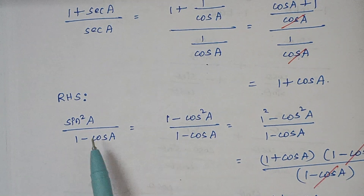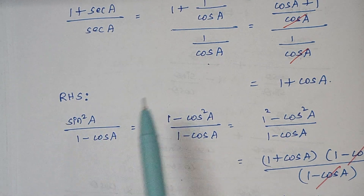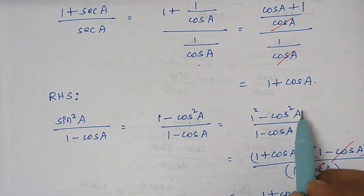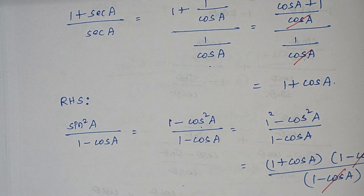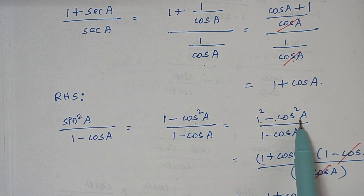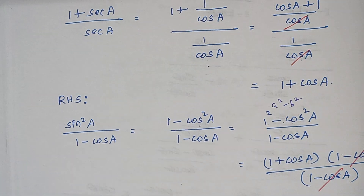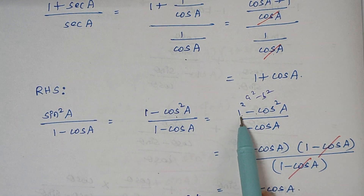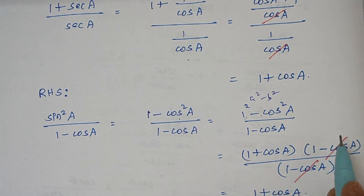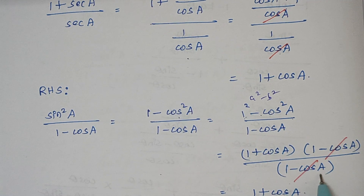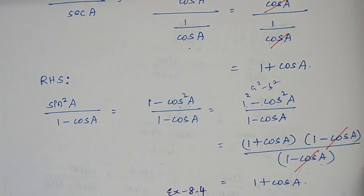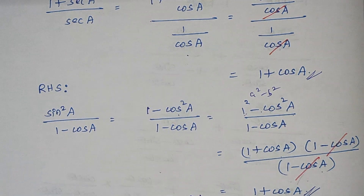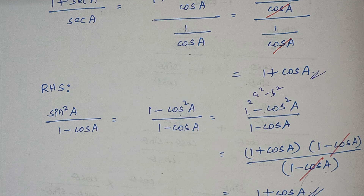Now taking the right hand side: sin square a by 1 minus cos a. Sin square a can be written as 1 minus cos square a, and since 1 square equals 1 this is 1 square minus cos square a, which is of the format a square minus b square. So it factors as 1 plus cos a multiplied by 1 minus cos a, divided by 1 minus cos a. The 1 minus cos a terms cancel, leaving 1 plus cos a. This is exactly what we have for LHS also. Both values are the same, so the given statement is proved.